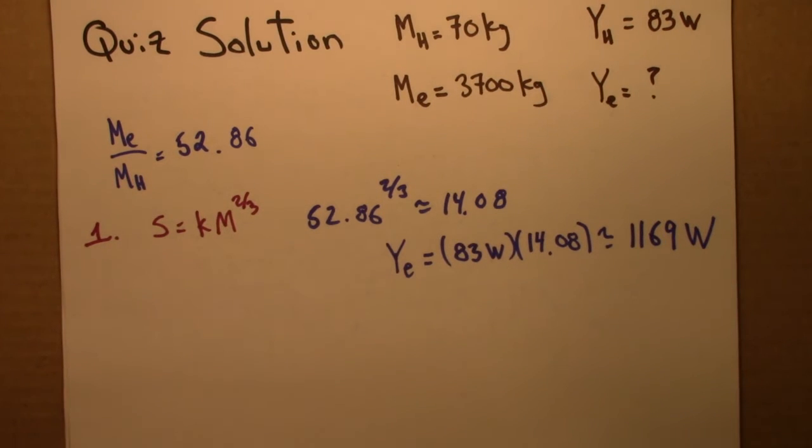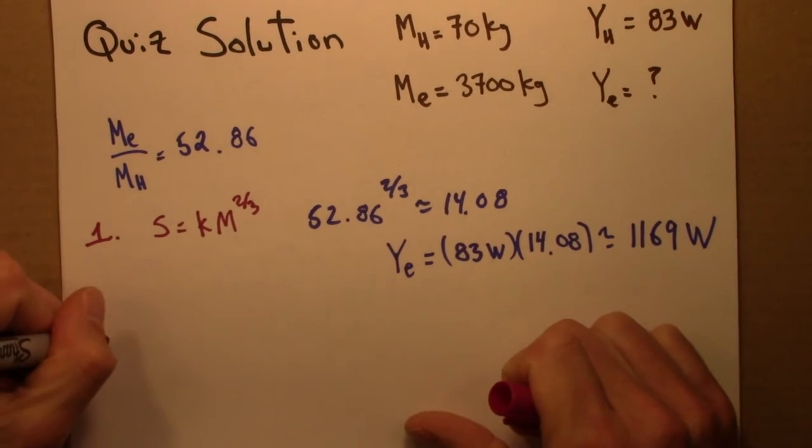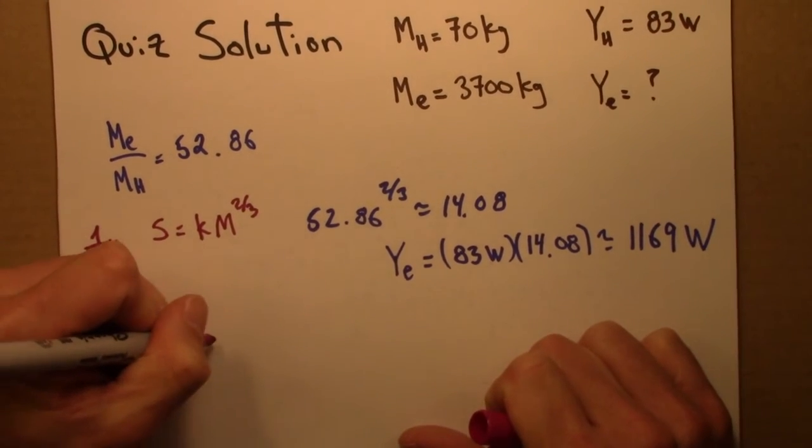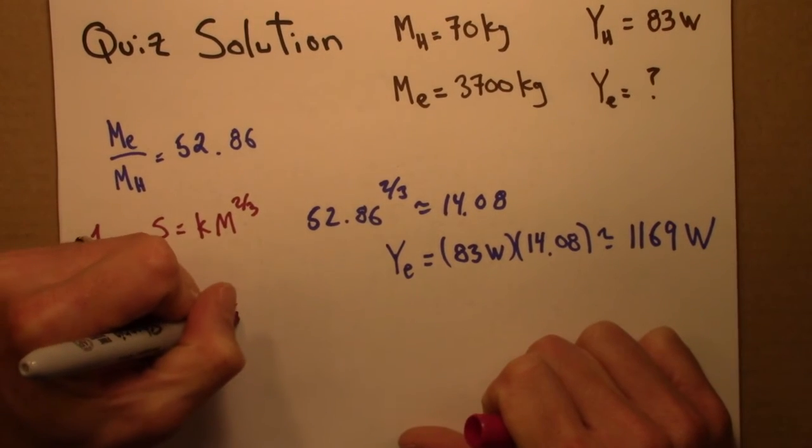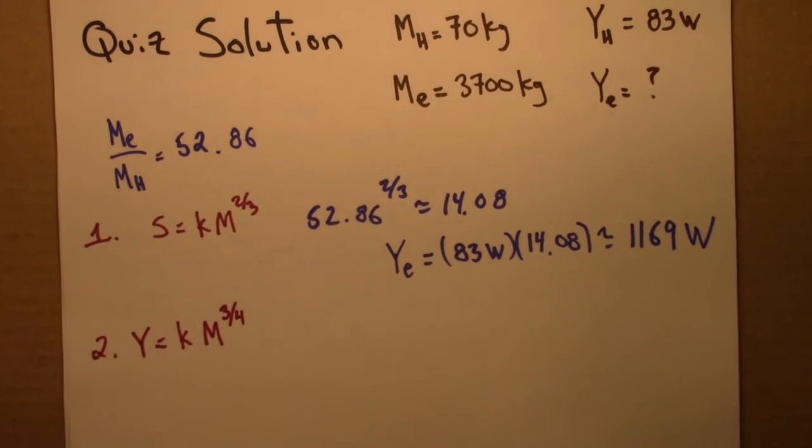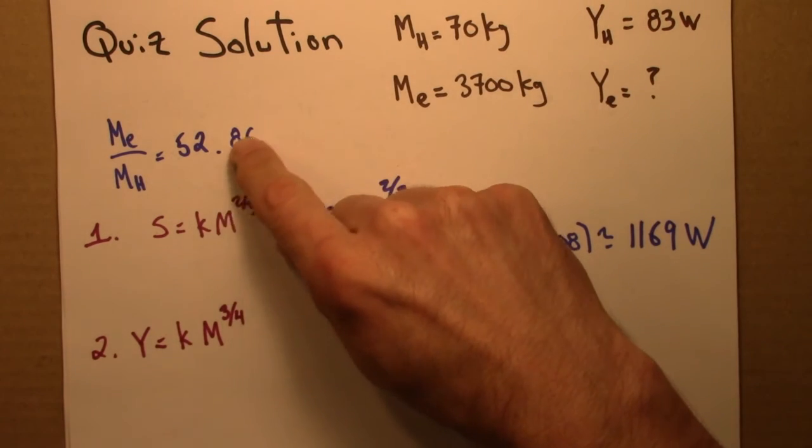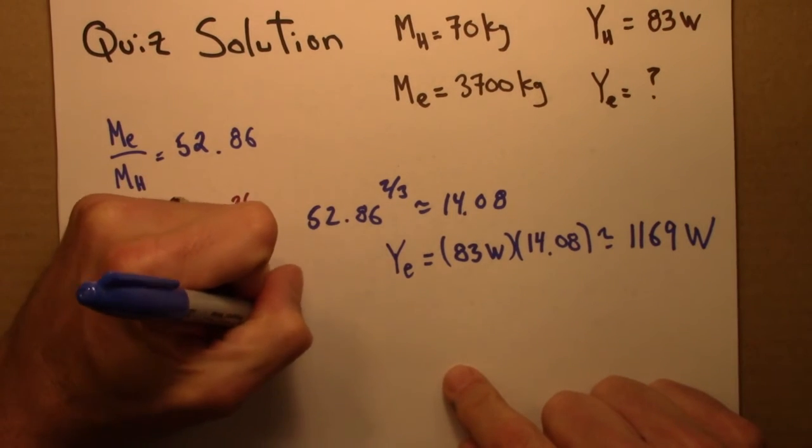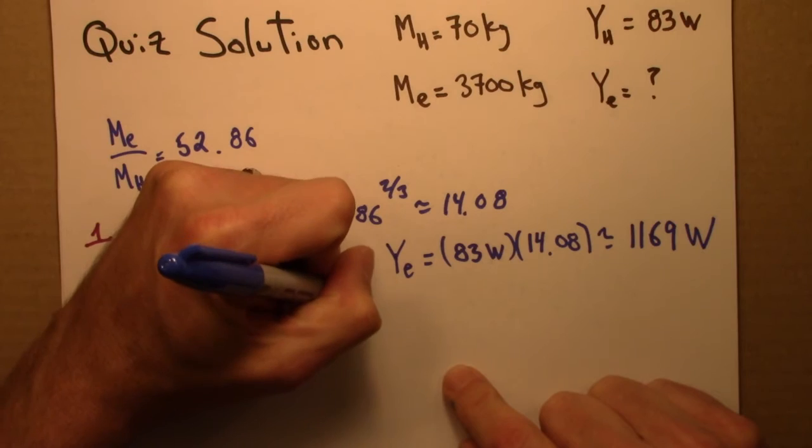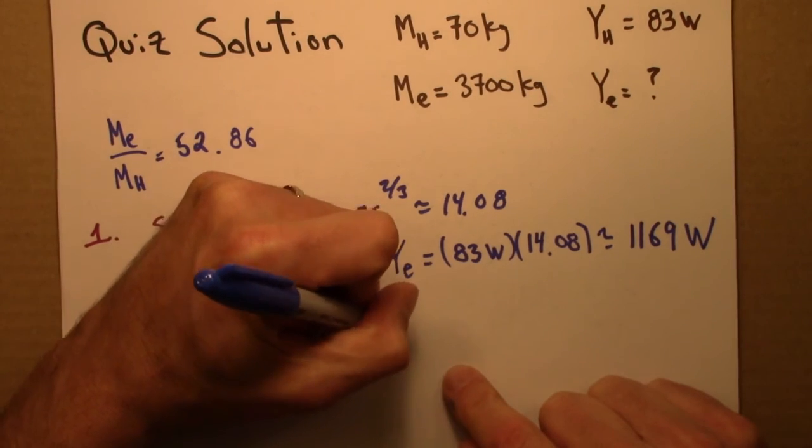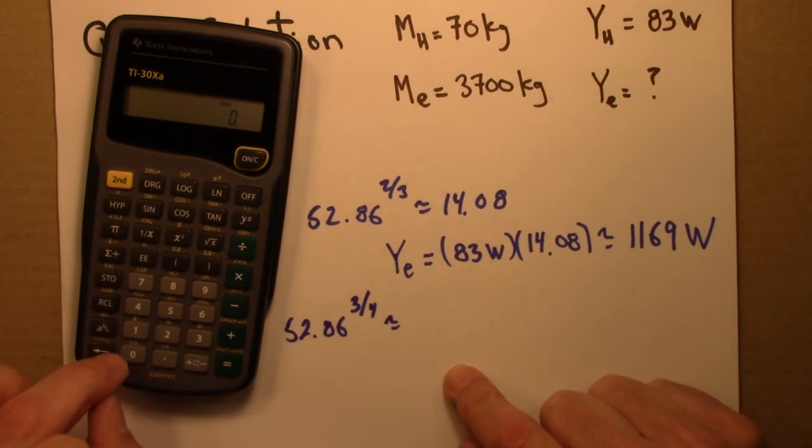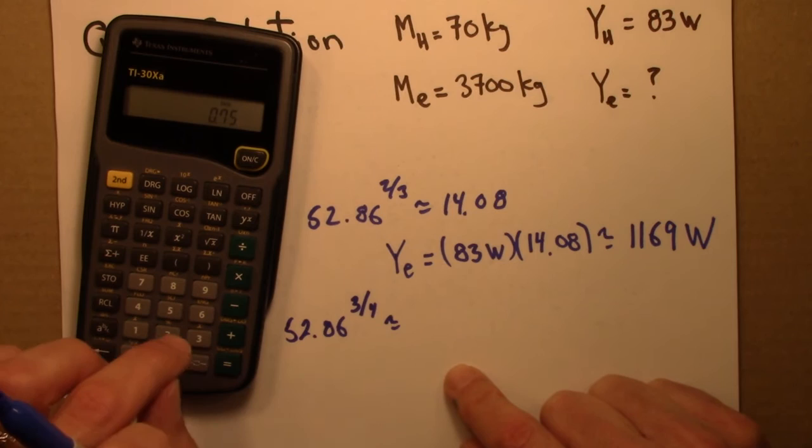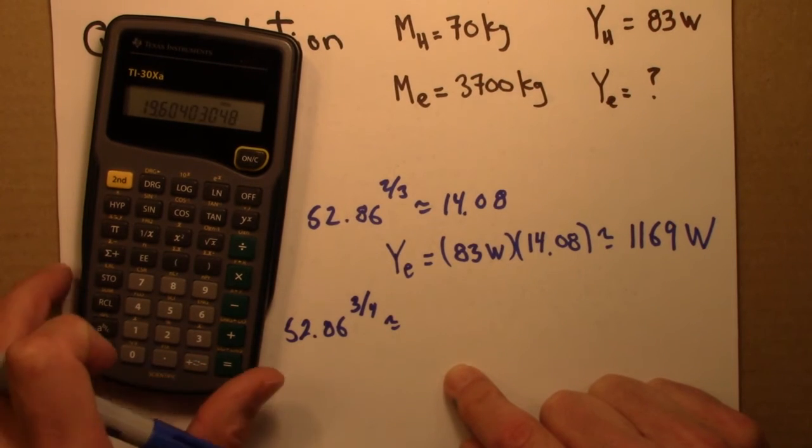What actually happens is that the metabolic rate Y is M to the three-quarters. That's the relationship. So I'm going to need to take this scaling factor of 52.86 and raise it to the three-quarters power. 52.86 to the three-quarters power. Let's see what I get there. So 52.86 raised to the 0.75 is 19.6.